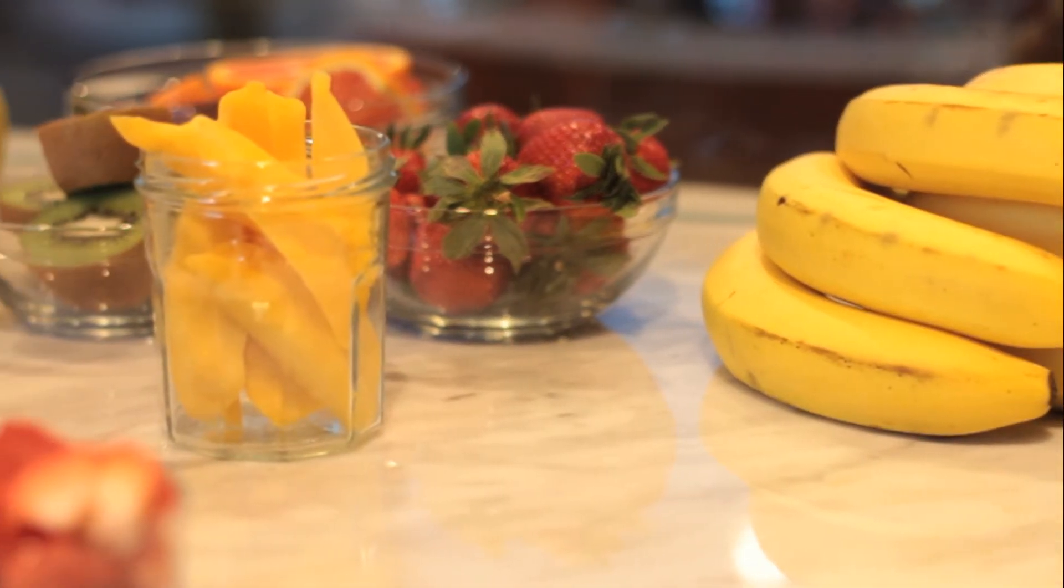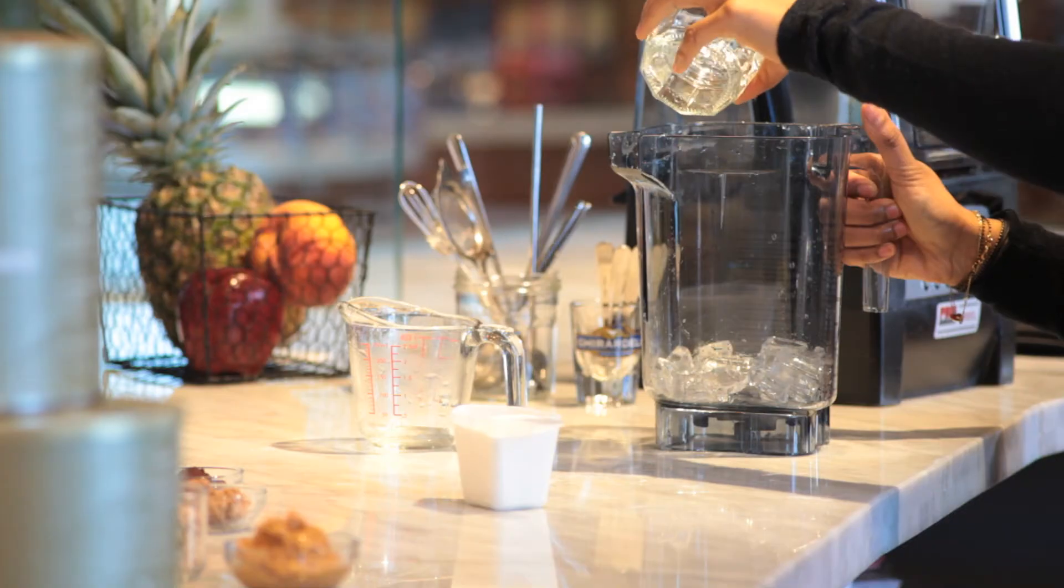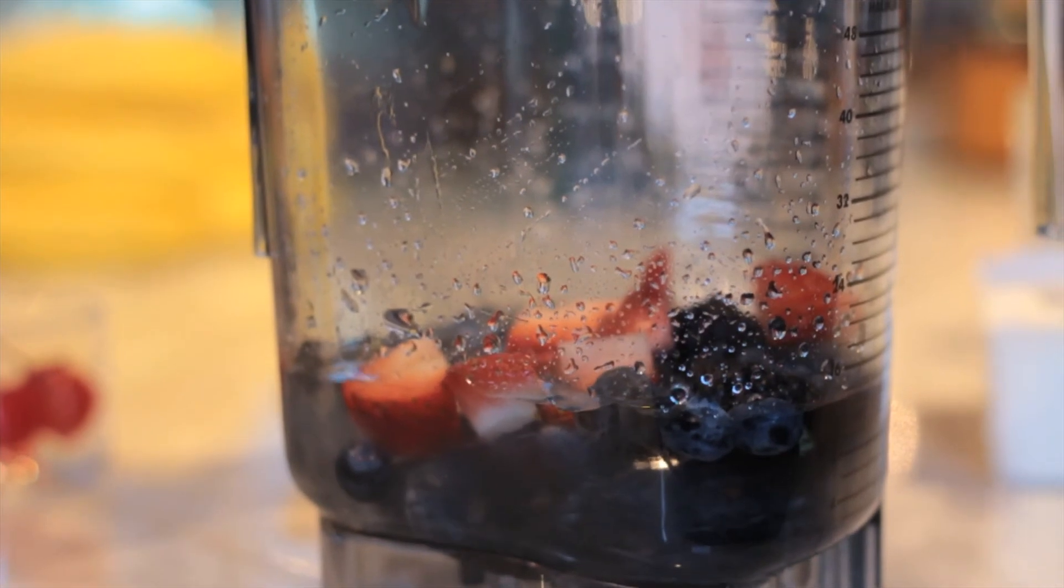Try adding bananas, strawberries, or tropical fruits for different flavors. Simply add ice to the blender followed by water and your choice of fresh or frozen fruit.